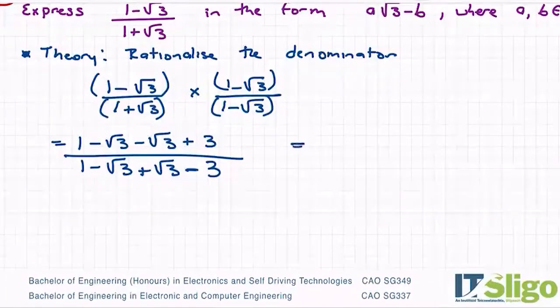So if we tidy that up on the top, we have one plus three is four. And we've minus root three minus root three, so we've minus two root threes.